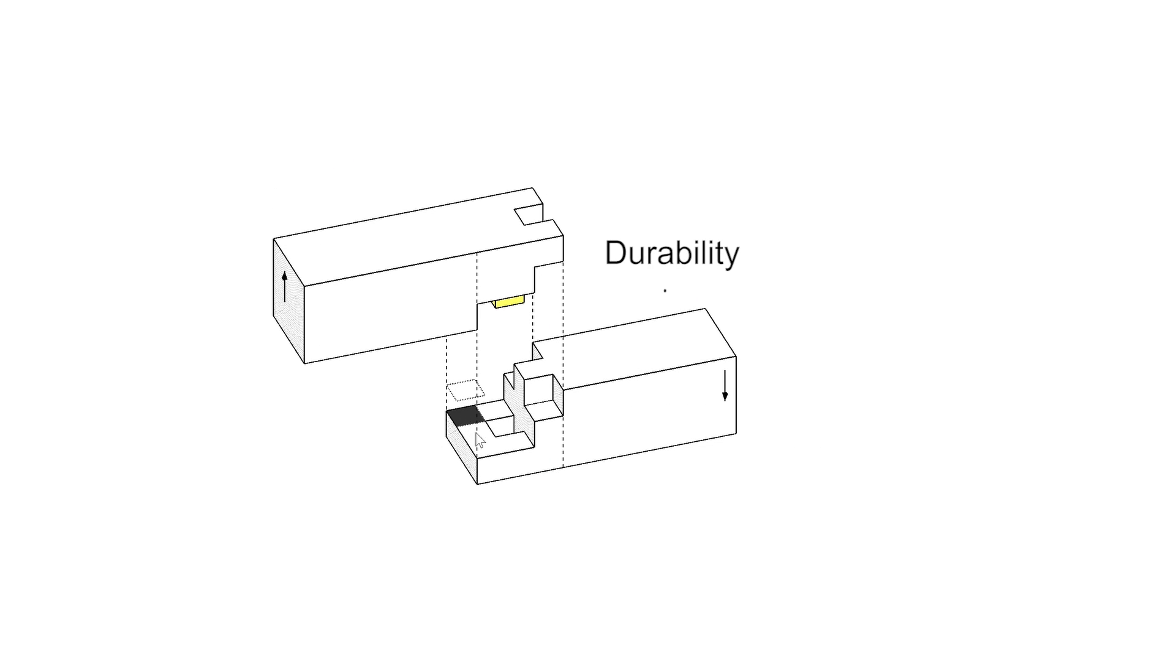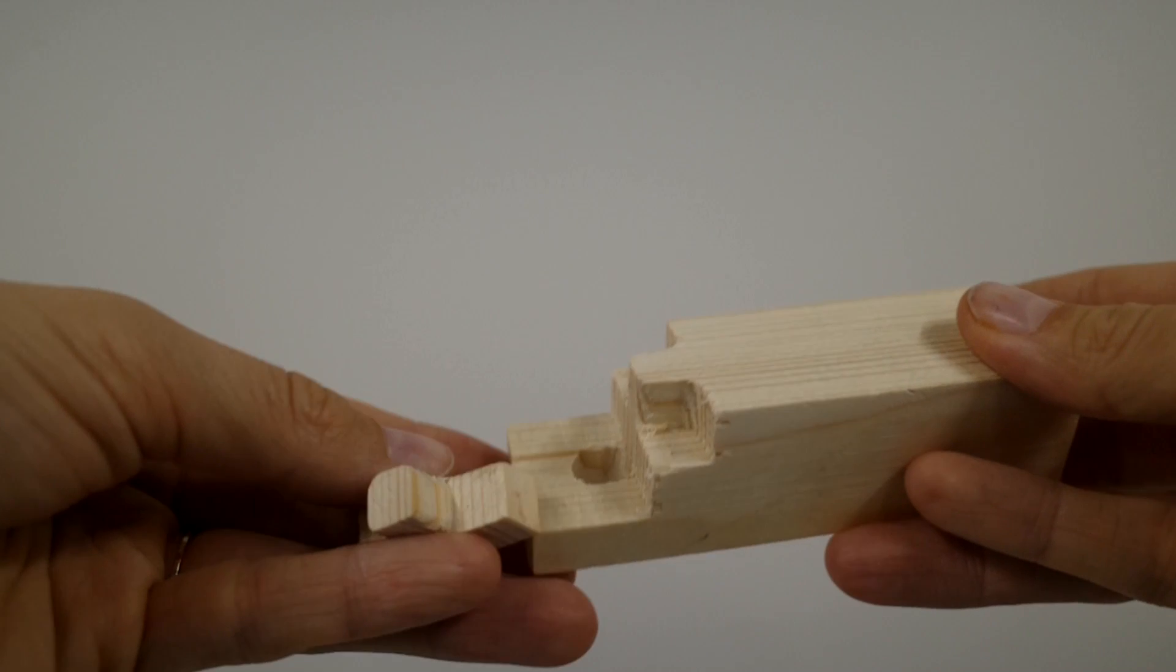Voxels that are likely to break off are given a yellow fill. These are voxels that stick out perpendicular to the grain orientation, which is 10 to 20 times weaker compared to the fiber direction.